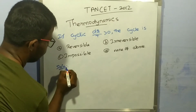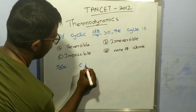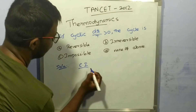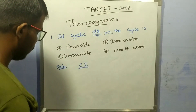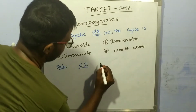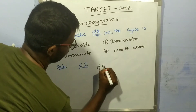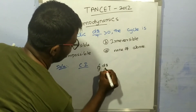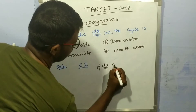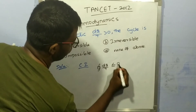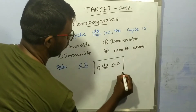We know the Clausius inequality. The cyclic integral of dQ/T is less than or equal to zero — this is the Clausius inequality.